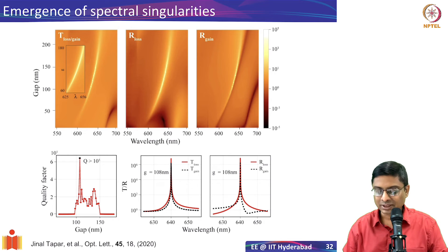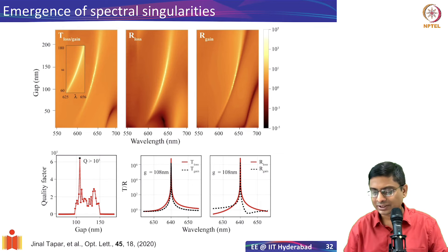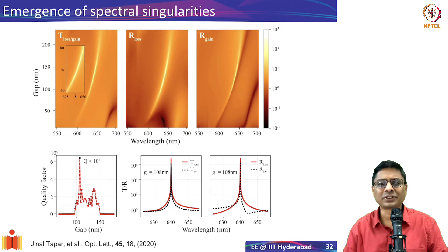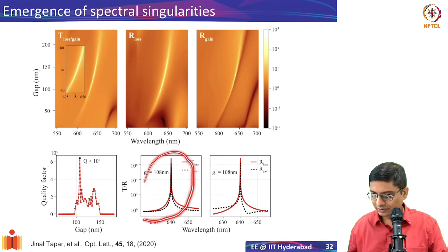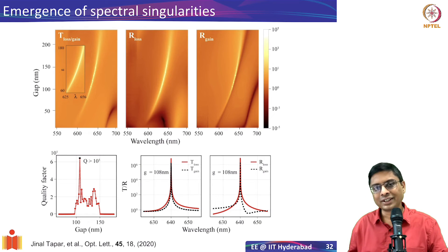Even if the structure exhibits a Q-factor of around 5000 or more, that would really help reduce the requirements for lasing. Importantly, this result is robust to the gap — you do not need a precise exact gap; slightly different gaps still produce lasing. The transmission and reflection spectra both exhibit very sharp peaks, whether you come from the gain side or the loss side. This is what makes this structure very exciting, and we are thinking about how to fabricate it.